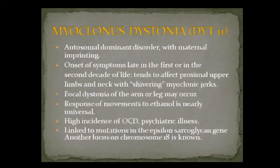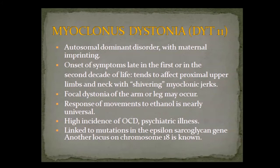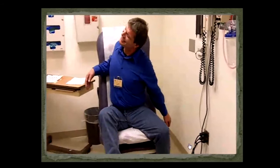Myoclonus dystonia is another autosomal dominant with maternal imprinting. Onset is usually in the first or second decade of life, affecting the upper extremities with peculiar myoclonic jerks. Importantly, these respond very well to alcohol — both the myoclonus and dystonia tend to get better with that. In these patients, there is a high incidence of psychiatric issues, mainly OCD. The gene found is the epsilon-sarcoglycan gene.